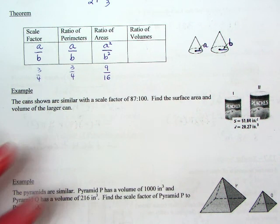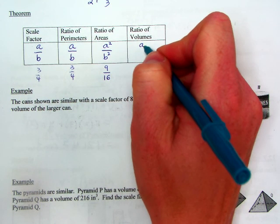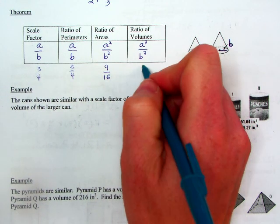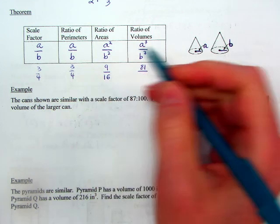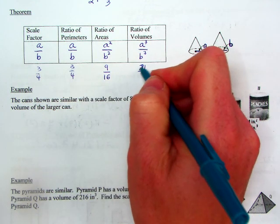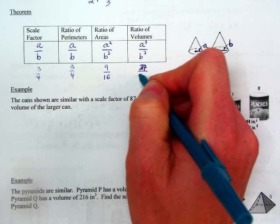Ratio of volumes, if you've kind of caught on to the pattern here, volumes are cubed, and so these guys are going to be cubed. So it would be 3 cubed, which is, sorry, 3 cubed is 27. And 4 cubed is 64.